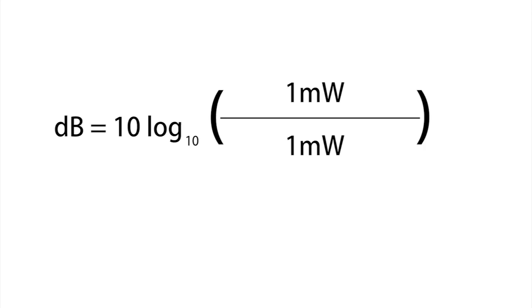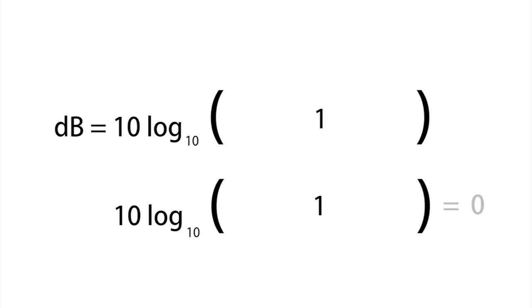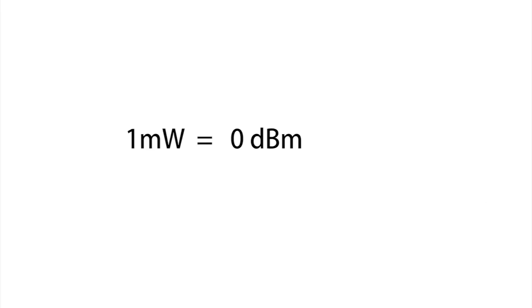This gives dB equals 10 log base 10, 1 milliwatt over 1 milliwatt. And we end up with 0. And to record this related to a milliwatt, we say dBm. 1 milliwatt is therefore 0 dBm. Doesn't mean there's no signal. It means it's 0 dBm, the ratio.